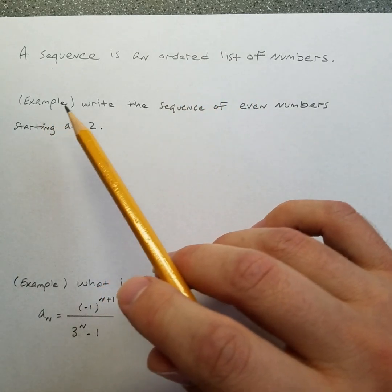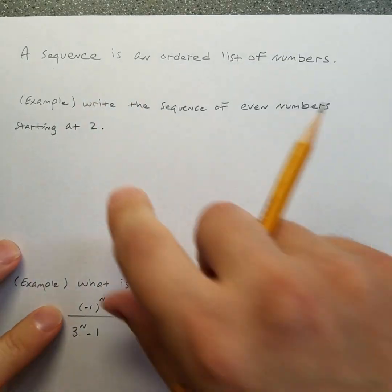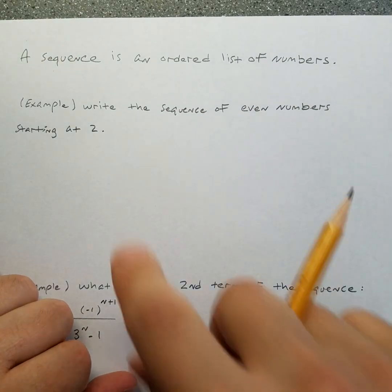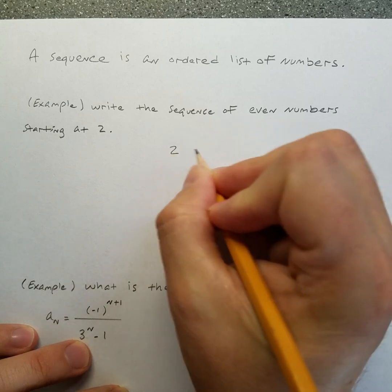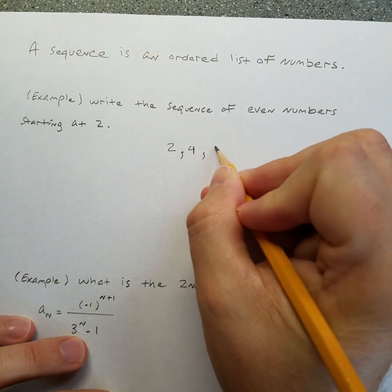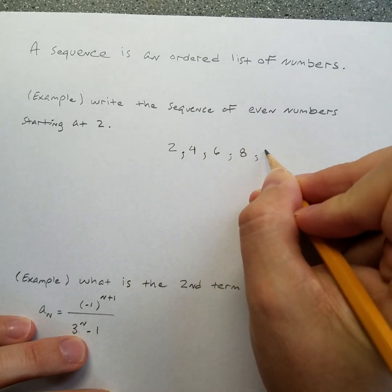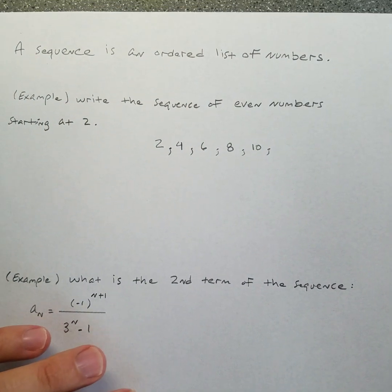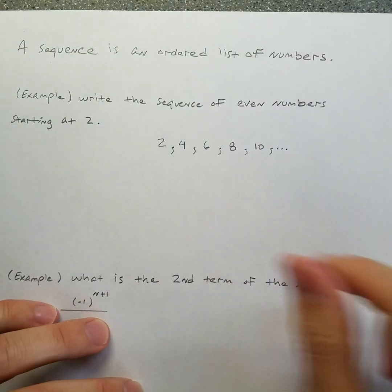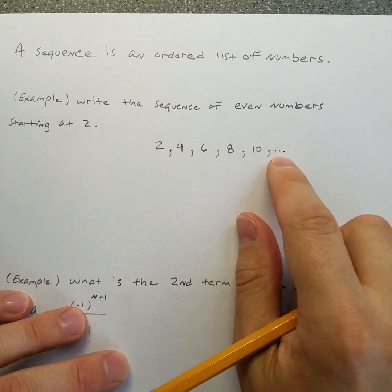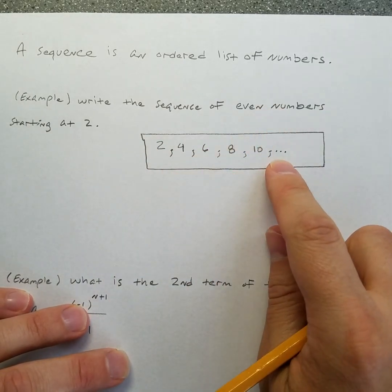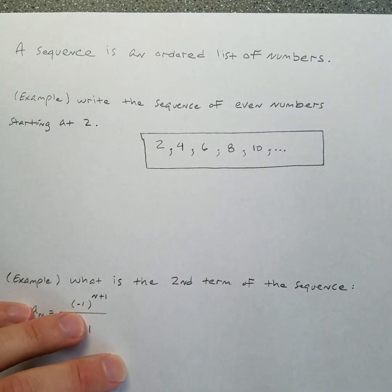Let's take something easy and tangible. Write the sequence of even numbers starting at two. Think of the list of numbers that are all even starting at two. The first term is two, then four, then six, then eight, then ten, and you can see how that list would literally never stop. To indicate that the sequence goes forever, we put these three dots, called ellipses. I can't write down the entire sequence of even numbers because that list never stops, but I can show you what it looks like.